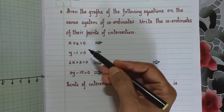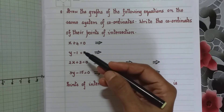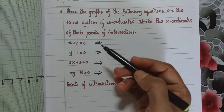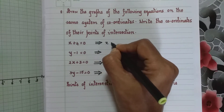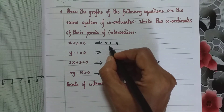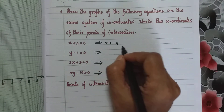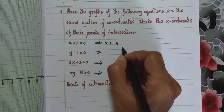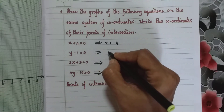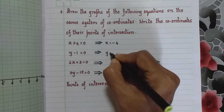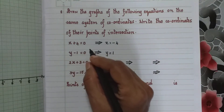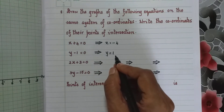First, x plus 4 equal to 0 gives us x equal to minus 4. It is x equal to a constant, therefore it is parallel to the y-axis. Next, y minus 1 equal to 0 can be written as y equal to 1, taking minus 1 to the other side, it becomes plus 1.